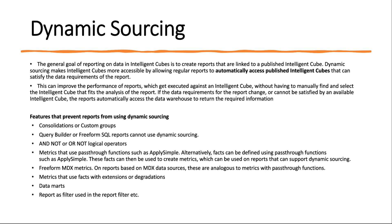In such scenarios, what you can do is create your fact using Apply Simple and then create a normal metric — a simple metric without any pass-through functions. That's how you can still achieve dynamic sourcing. Otherwise, for performance it's always better to avoid pass-through functions and use filters or other functions natively available in MicroStrategy.